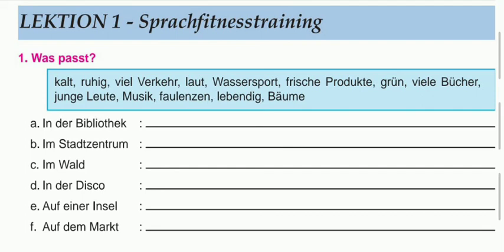So these are the meanings of these words. In the exercise, you are supposed to match the answers given above to each question. For example, 'Bibliothek' means library — so what is the atmosphere or what things are found in a Bibliothek? Match the suitable option from above and write it properly. Do send it to me, and try to solve it in your homework notebook if possible.